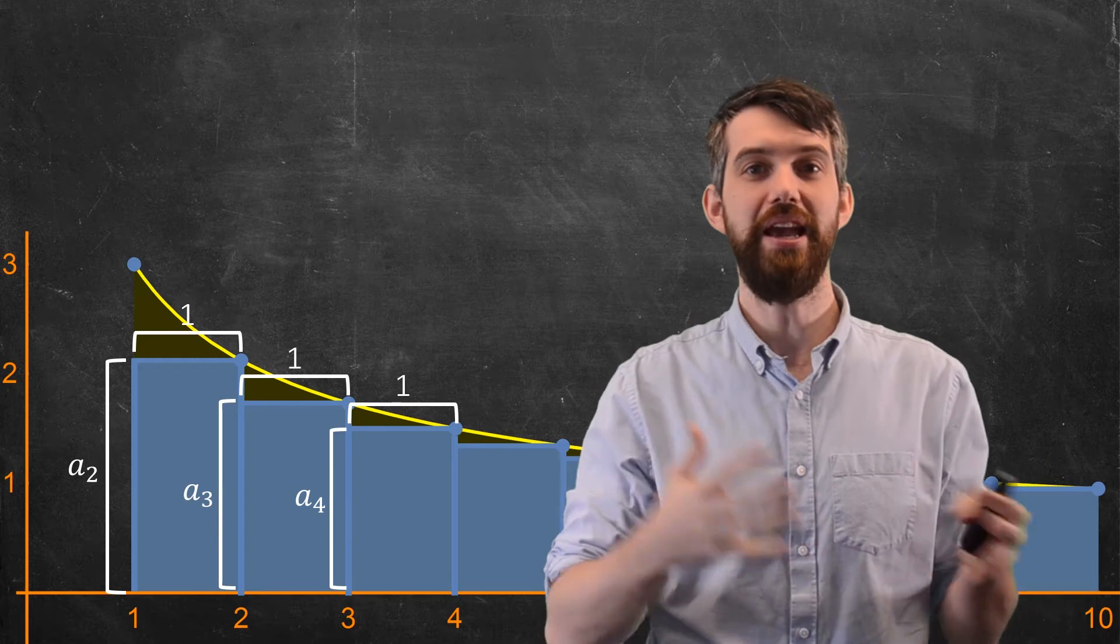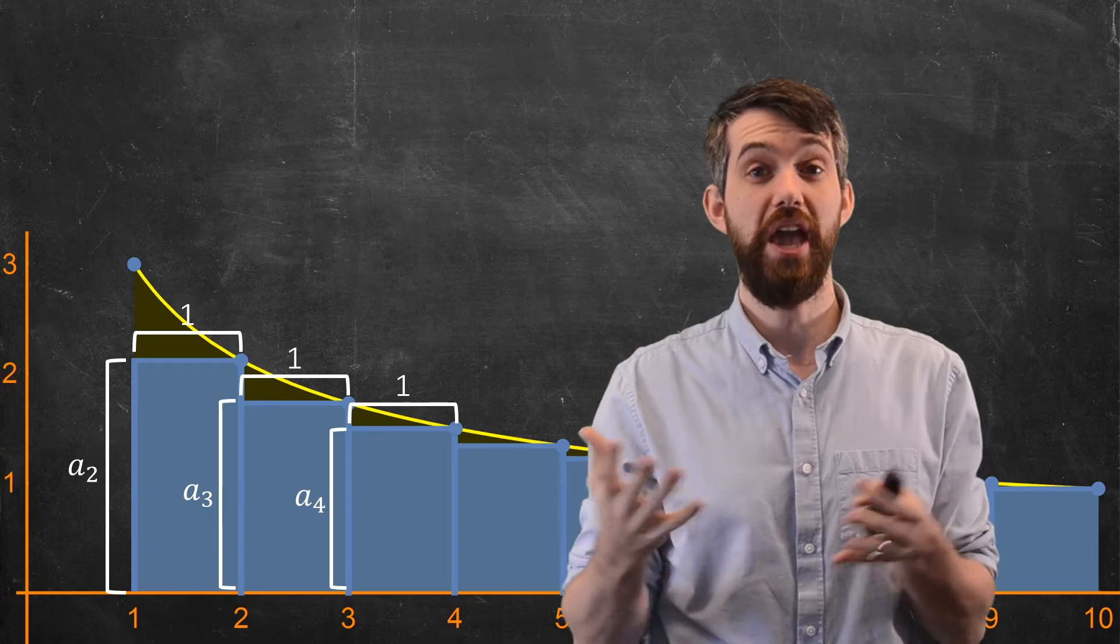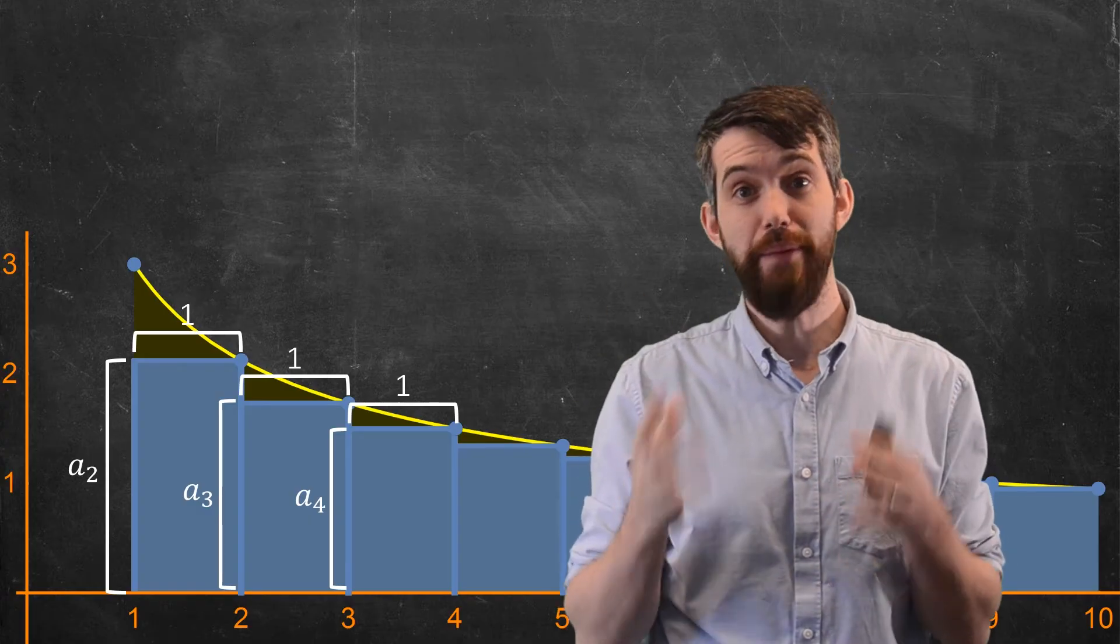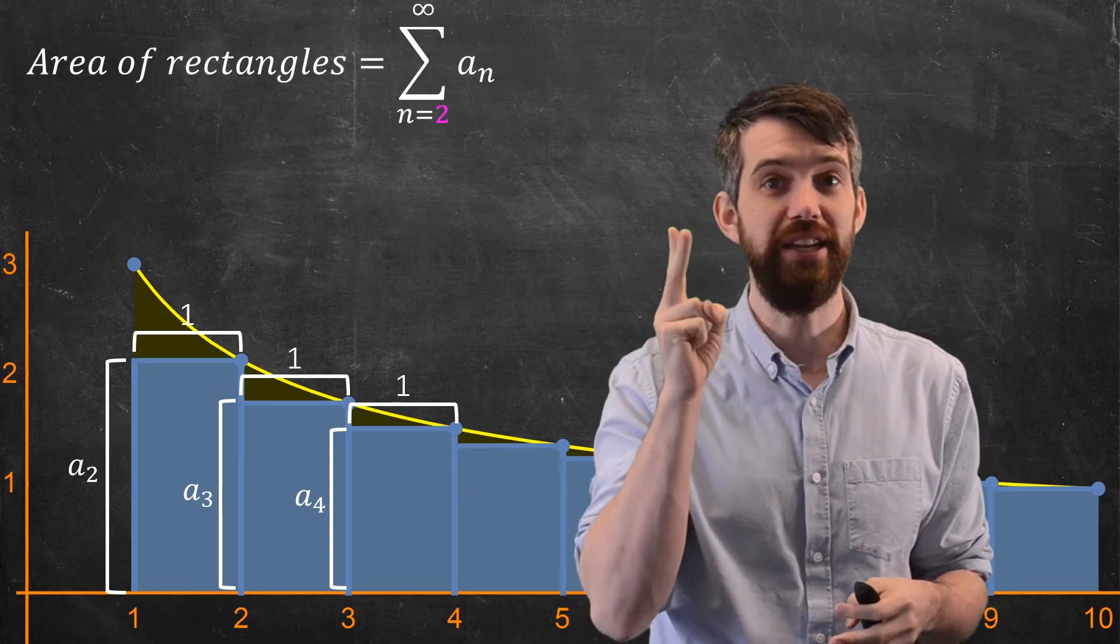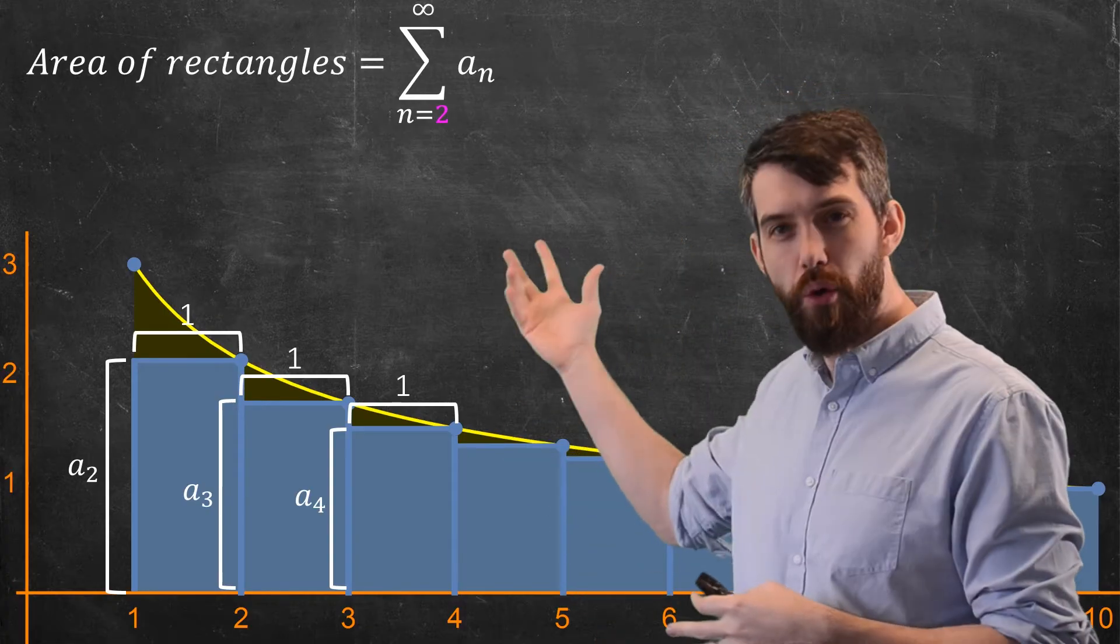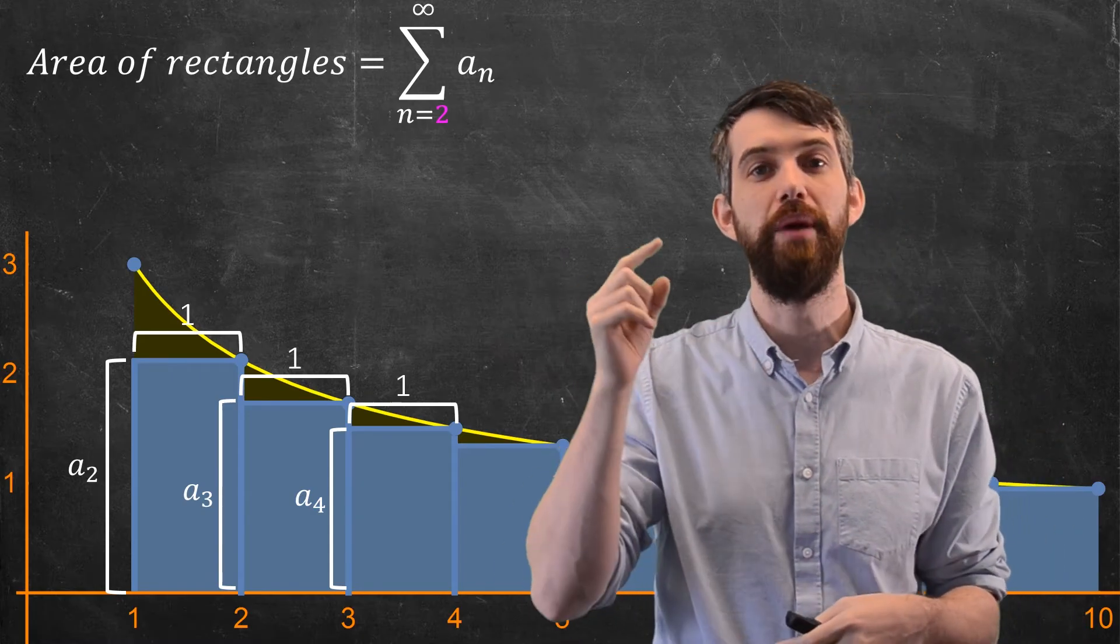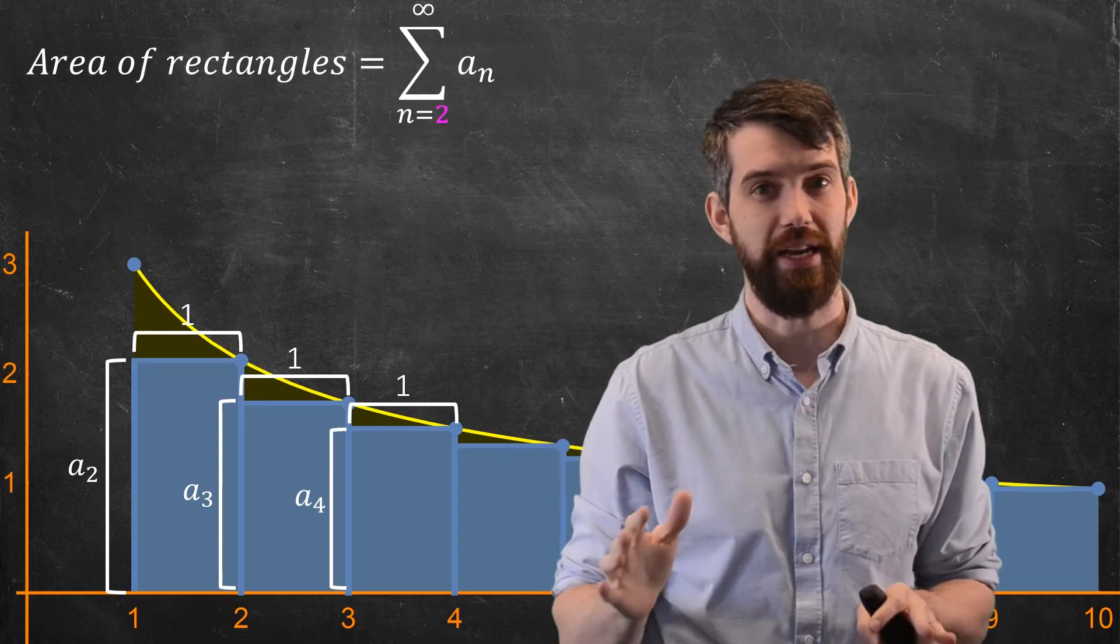So I can make an inequality again, but it's a different one. That is to say, if I want to talk about the areas of the rectangles, I'm no longer starting at a₁. I'm starting at a₂. a₂ represents the first rectangle I look at. So it's not quite the same series before, not the sum from 1 to infinity, the sum from 2 to infinity. And you might think that's a big difference, but it really isn't.